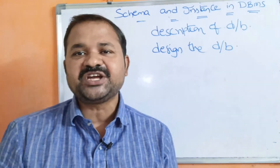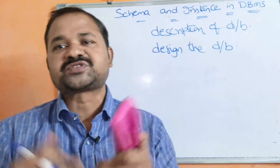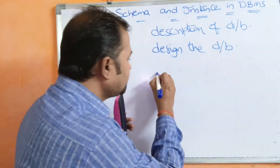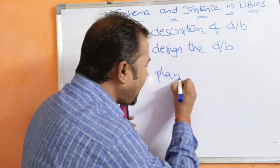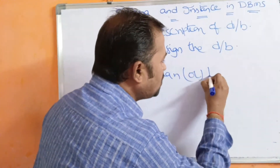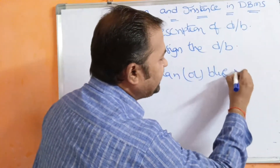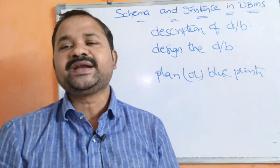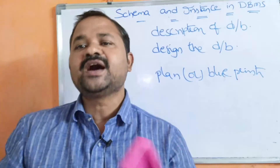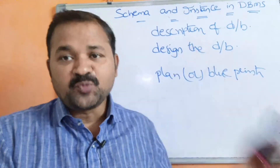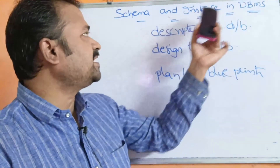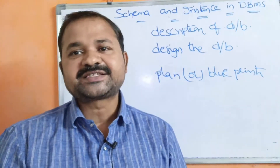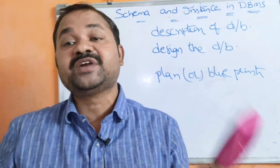The best example for schema is the construction of a house. First we have to design a blueprint — a plan. And then according to the blueprint, the builder will build the house. So that blueprint is nothing but the database schema. Schema means the logical description of the database.